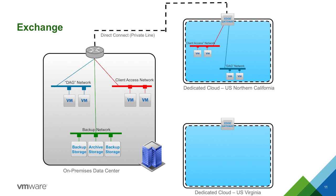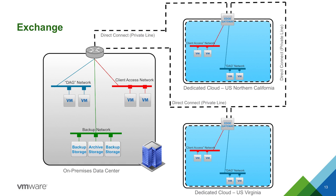I can do the same thing for East Coast employees by spinning up another dedicated cloud in our Virginia data center — same client access network, same DAG network. When I extend the MPLS connection, I do a Direct Connect from California to Virginia, as well as Virginia back to the private data center, creating a loop. This gives me true database availability groups that can withstand a failure — you need three to withstand a failure. So I'm getting geographic dispersion of my Exchange environment without procuring extra capacity in my data center, and I can withstand an entire data center outage without losing mailboxes. My entire backup and availability network extends to both remote clouds.